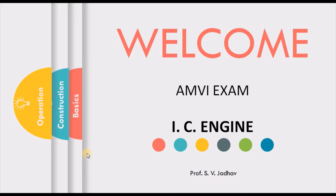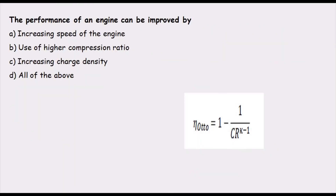The first question is: the performance of an engine can be improved by — options are increasing speed of the engine, use of higher compression ratio, increasing charge density, and all of the above. When we increase the speed, the number of power strokes per unit time increases, and therefore the power per unit time increases — so performance is going to increase.